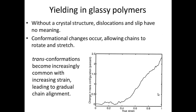Let's take a look at yielding in glassy polymers first, or those polymers that lack a crystal structure. Without a crystal structure, dislocations and slip have no meaning. So instead, what's happening is you're getting conformational changes in the polymer molecule backbone — in other words, the bonds are rotating along the backbone of the polymer chain, allowing the chains to rotate, stretch, and slide past one another.